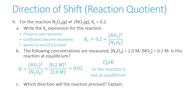Because Q is not equal to K, we know the reaction is not at equilibrium. The value of Q is too small. To make this number grow to approach K, we need to produce more products. So the reaction will shift toward products.